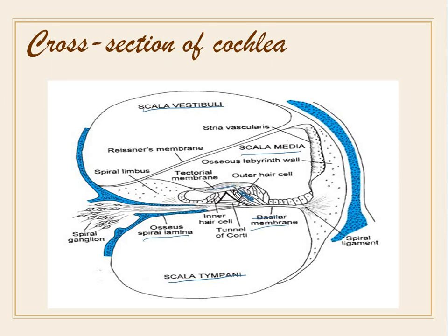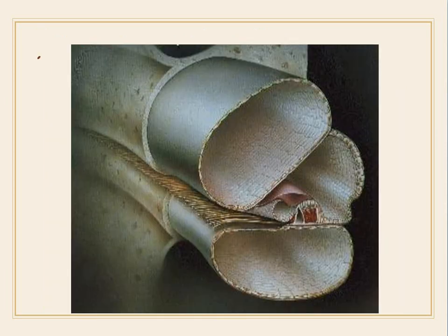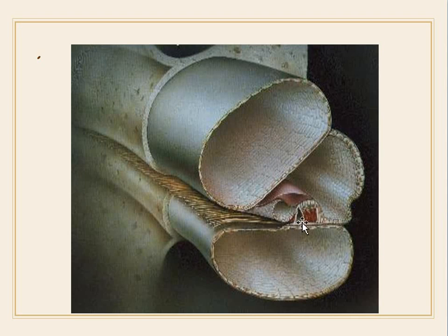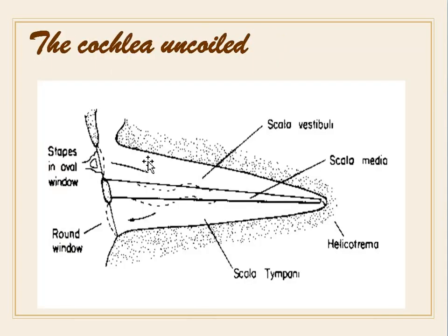This is the tectorial membrane, the osseous labyrinth wall, the spiral ligament, and the spiral ganglia. This is Reissner's membrane. In the electron microscopic picture, you can see Reissner's membrane, the tectorial membrane, the inner hair cells lying over the osseous spiral lamina, and the outer hair cells lying over the basilar membrane.